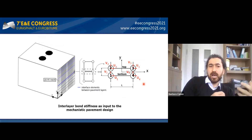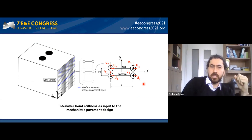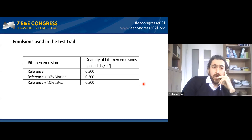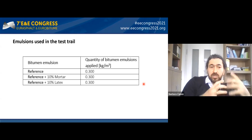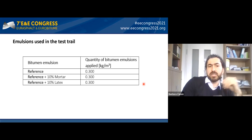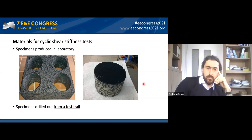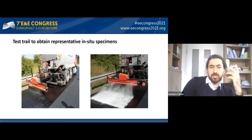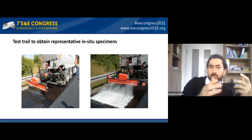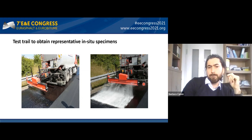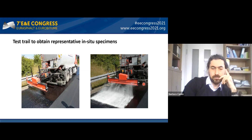To optimize the interlayer bond, we used a reference bitumen tack coat and added to this 10% mortar and 10% latex. Specimens were prepared both in the lab using a vibratory sector compactor and at a test track using a specific device to apply the tack coat along with the modifications. Here in the right you may see the addition of the filler as well as the addition of the latex particles.